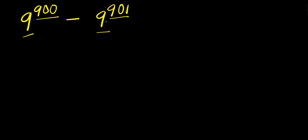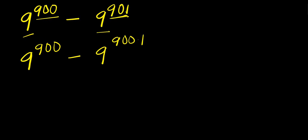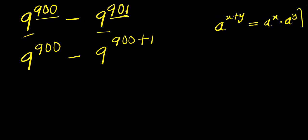So, the first step is to express 901 as a summation. We simply have 9^900 minus 9^(900+1), because 900 plus 1 is 901. Now, if you have a^(x+y), this equals a^x times a^y.